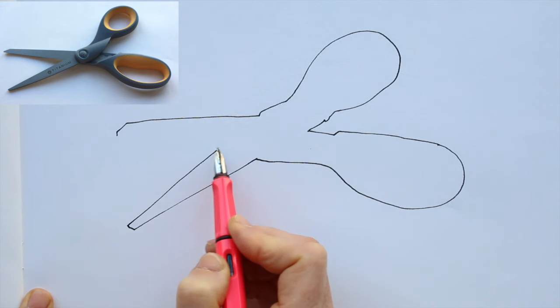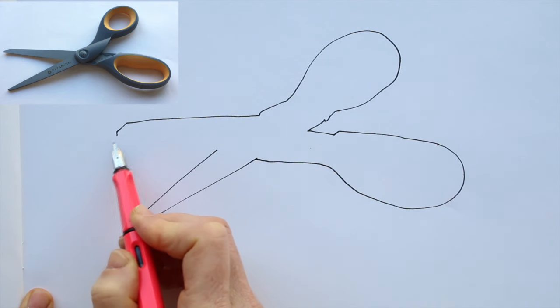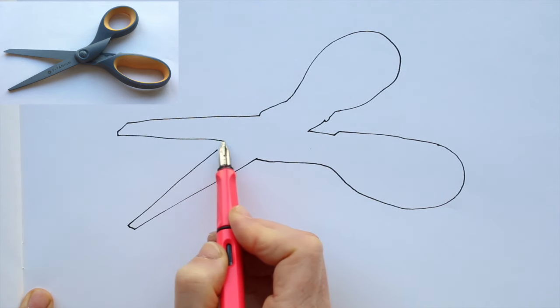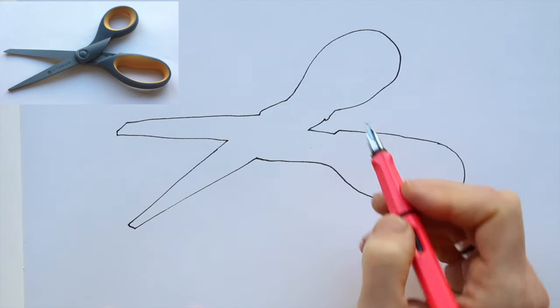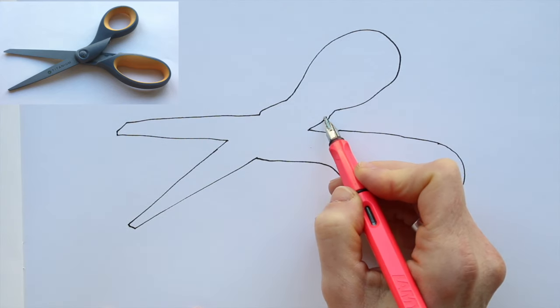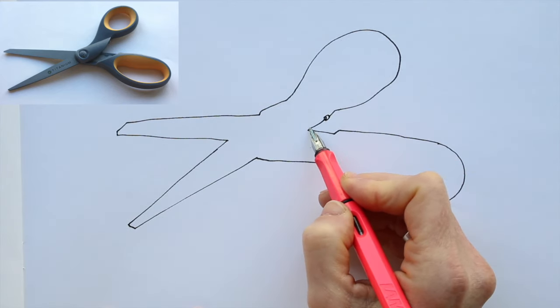Again here, I make sure that my line will end here, so it makes sense later for the blade of the scissors to connect to the handle. This way I work my way around the shape until I have the contour done.